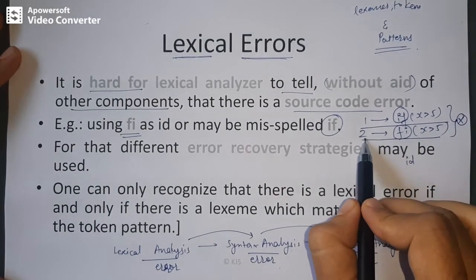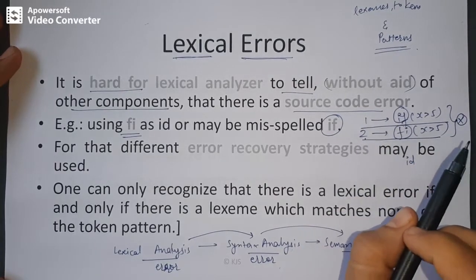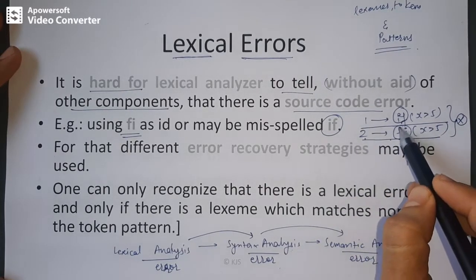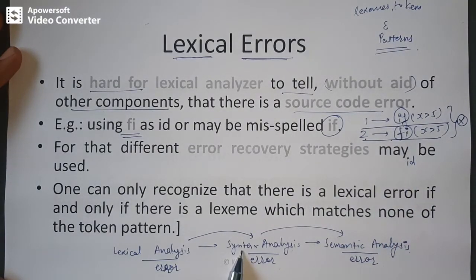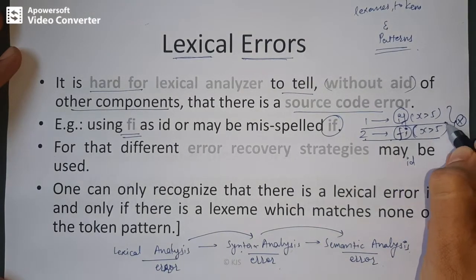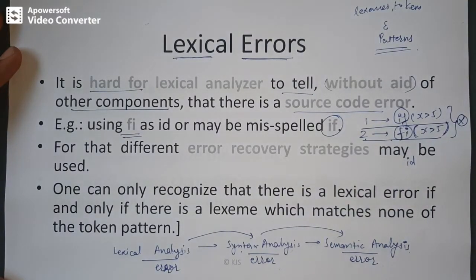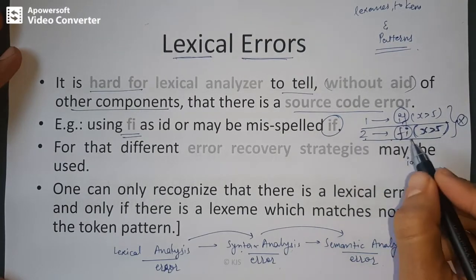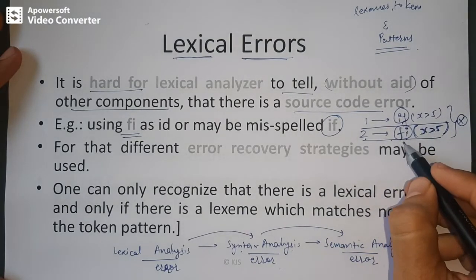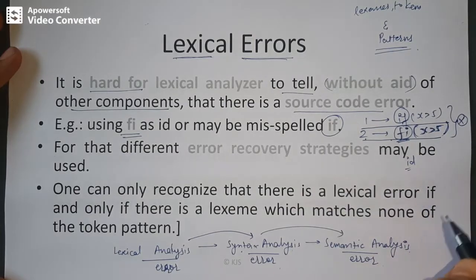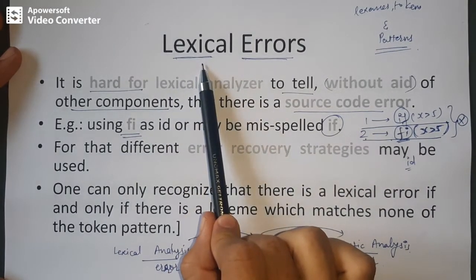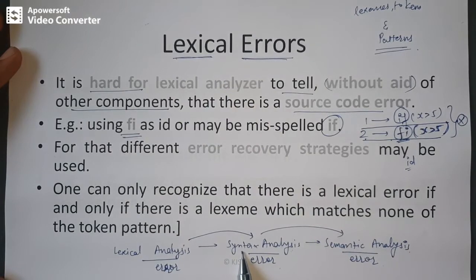The second statement is wrong, but the lexical analyzer does not know it is wrong. This is caught by the syntax analyzer. For example, 'fi x greater than 5' — since 'fi' is not recognized as any keyword, it is treated as an identifier, and the missing bracket makes it a syntax error.